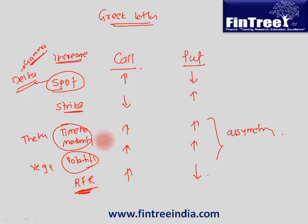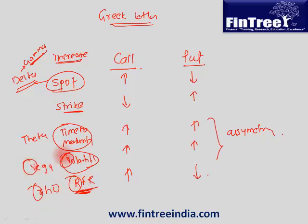And the relationship between RFR and call and put is given by a Greek letter called rho. It's very easy to remember: RFR — rho, vega for volatility, theta for time to maturity, and just remember delta for spot. We'll see the second derivative gamma when we study the Greeks in more detail.